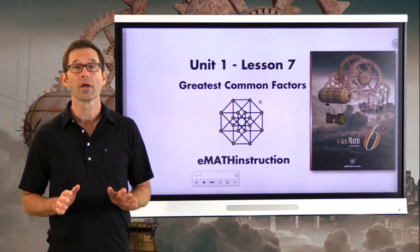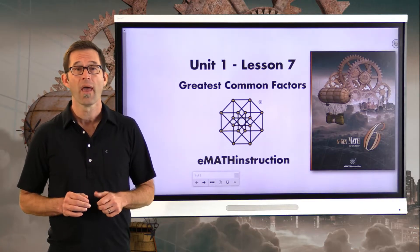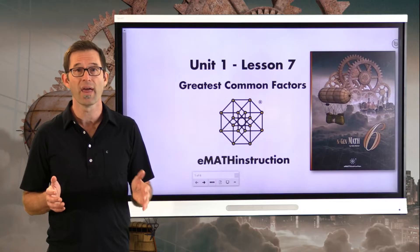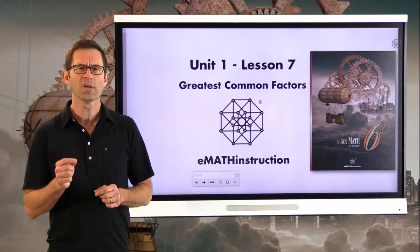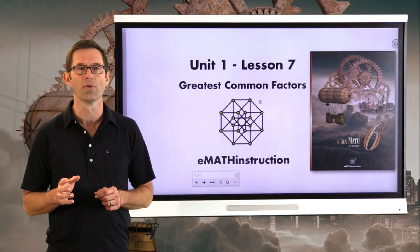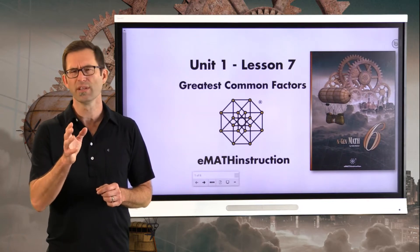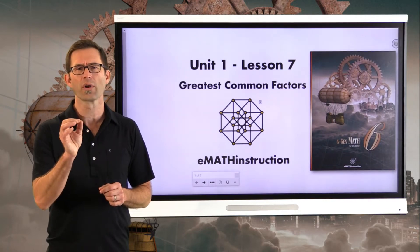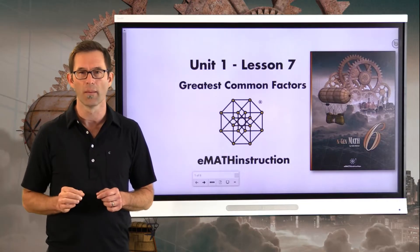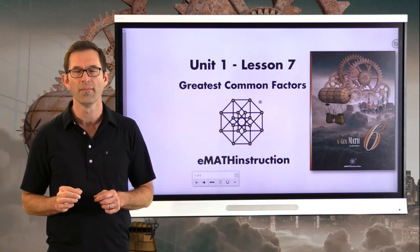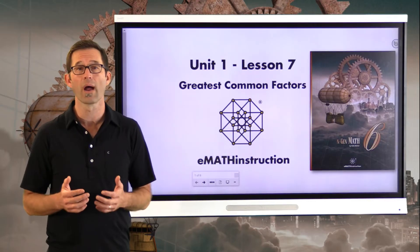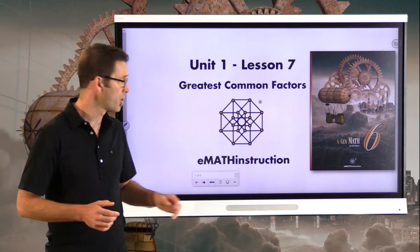We've been working a lot with factoring in this unit — taking a number and breaking it down into a product. And now, just like we did with Least Common Multiples, we are going to be finding the greatest common factors of two numbers. Let's jump into that with our first exercise where we do some background review.